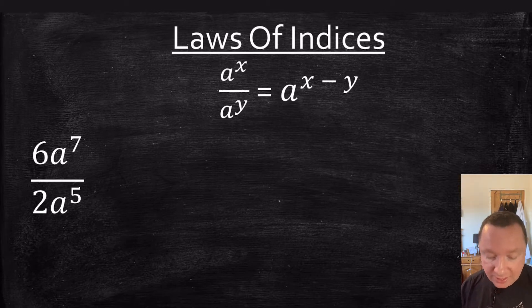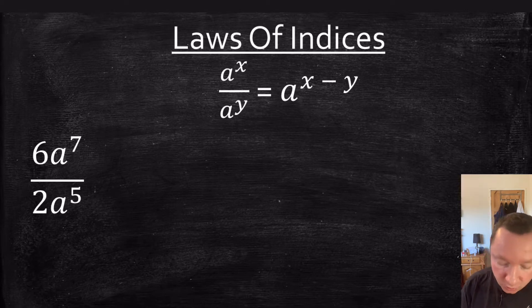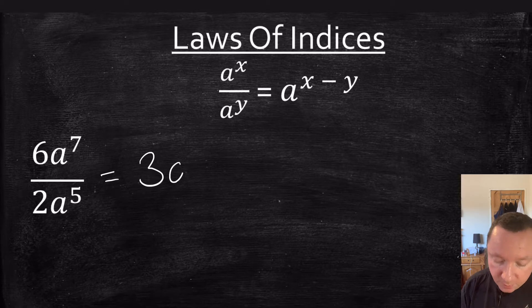Let's look at a simple example: 6a to the 7 over 2a to the 5. I can do 6 divided by 2 first to get 3, and then we've got a to the power of 7 minus 5. So that is 3a squared.